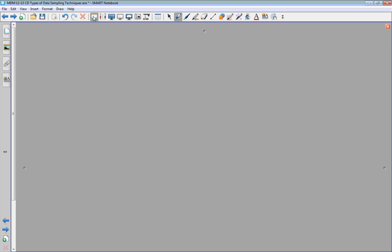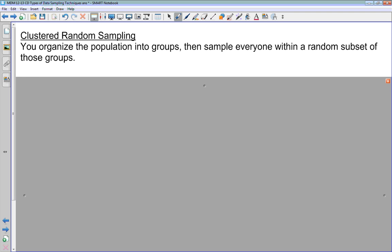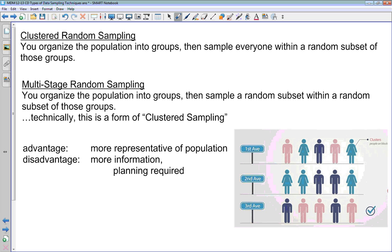Next up is clustered random sampling, where you take your population and you organize it into groups, then sample everyone within a subset of these groups. This is closely related to what we're going to call multi-stage random sampling. We've got a picture here. We can use this to illustrate cluster sampling. We've got a population, which are all the people in our picture, and we've divided them into groups by what street they live on: 1st Ave, 2nd Ave, 3rd Ave. In a cluster sample, you would take a subset of those three groups. You might choose one of those groups, and you would sample everybody inside this group. So you would ask everybody on 3rd Ave to be part of your survey. The clustering is kind of done automatically by the population itself, and you survey everybody inside one of those clusters.